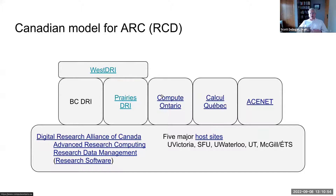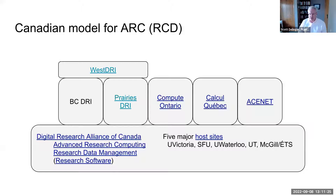The Canadian model is one of collaboration across the entire country. Underpinning any kind of local and regional efforts is a national organization, the Digital Research Alliance of Canada. The advanced research computing aspect had previously been called Compute Canada. Research data management is also a mandate of the Alliance, and research software is coming across from our national networking organization, CANARIE, and is still being transferred in.